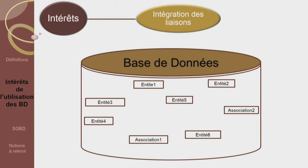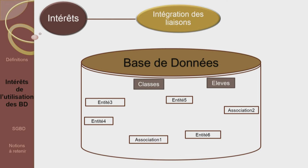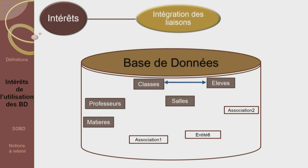L'intégration des liaisons est le point fort des bases de données et constitue son premier intérêt. Dans une base de données, nous allons toujours trouver des entités et des associations. Revenons à l'exemple de l'établissement : nous allons trouver une entité classe et une entité élève, reliées entre elles puisqu'une classe est formée par plusieurs élèves et un élève appartient à une classe. Chaque professeur enseigne une matière pour une classe dans une salle, ce qui identifie un cours.